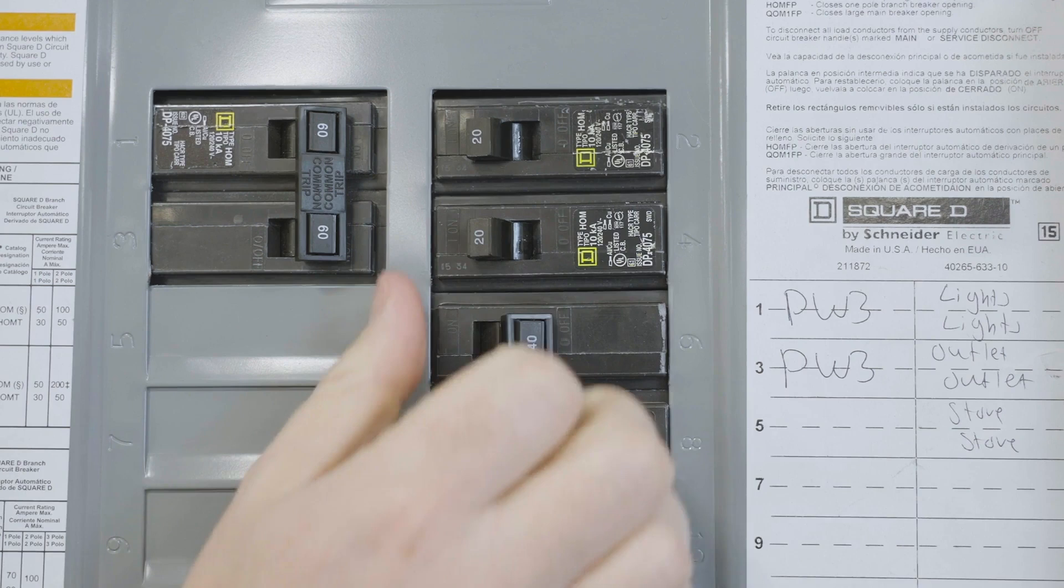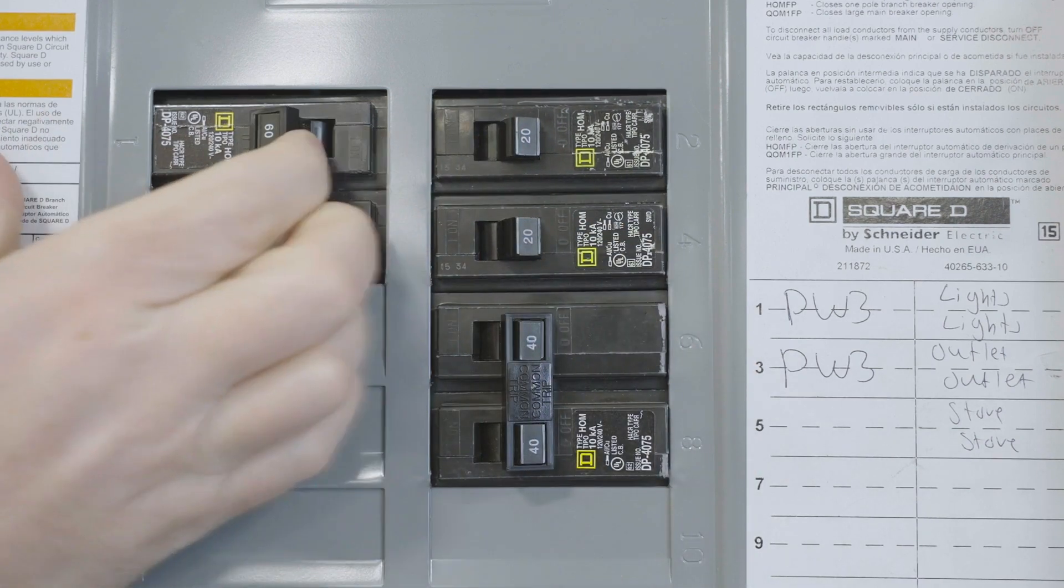Begin by turning off breakers for any parallel generation sources, then the home loads and main breaker.